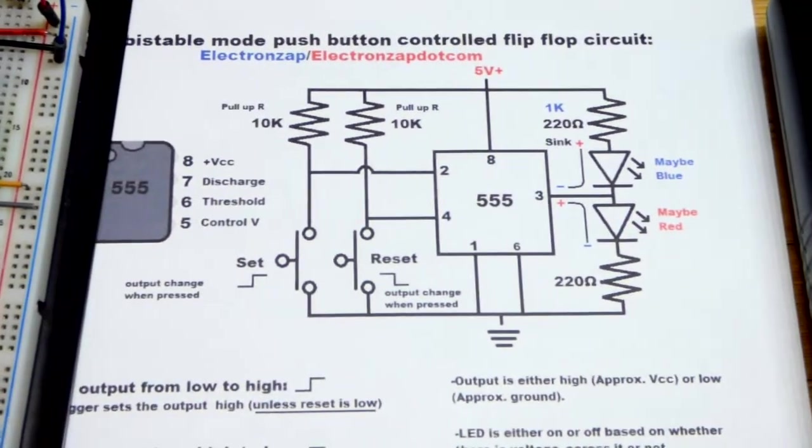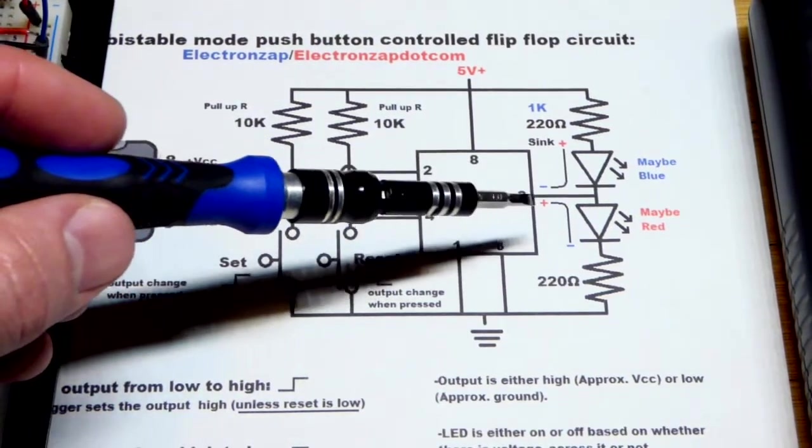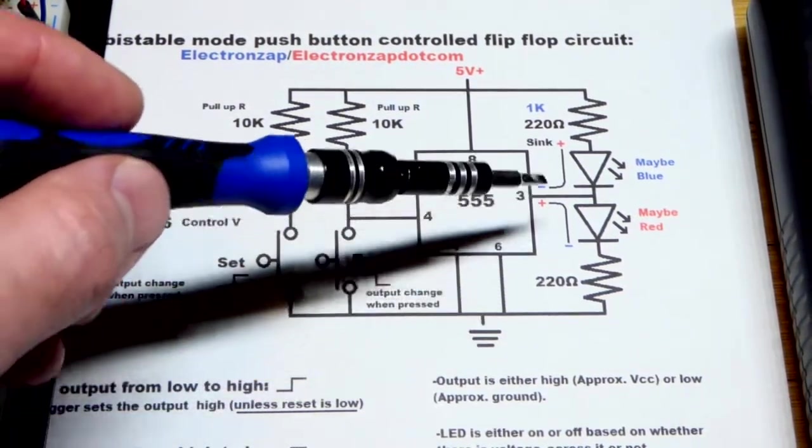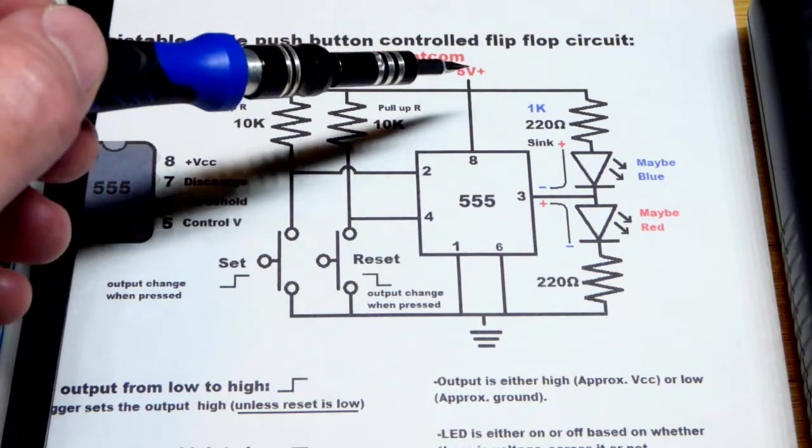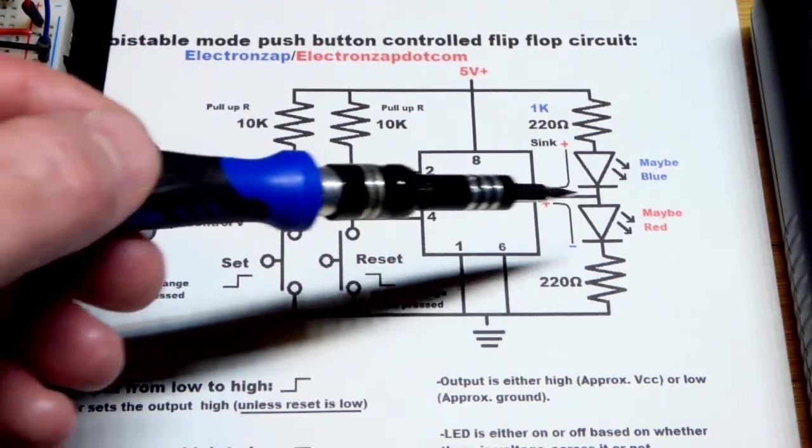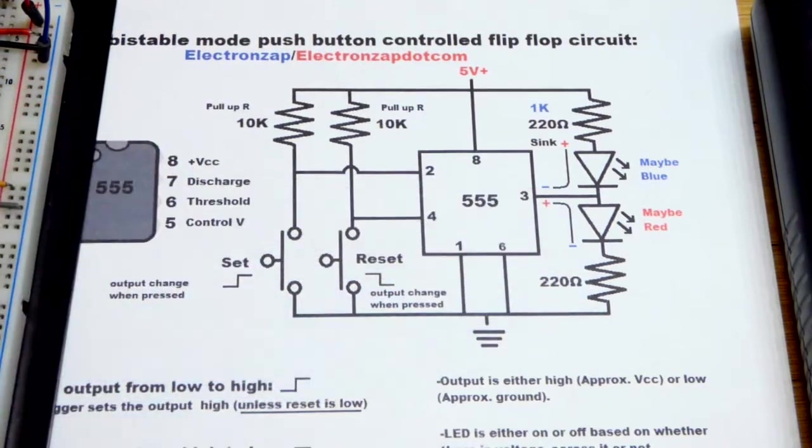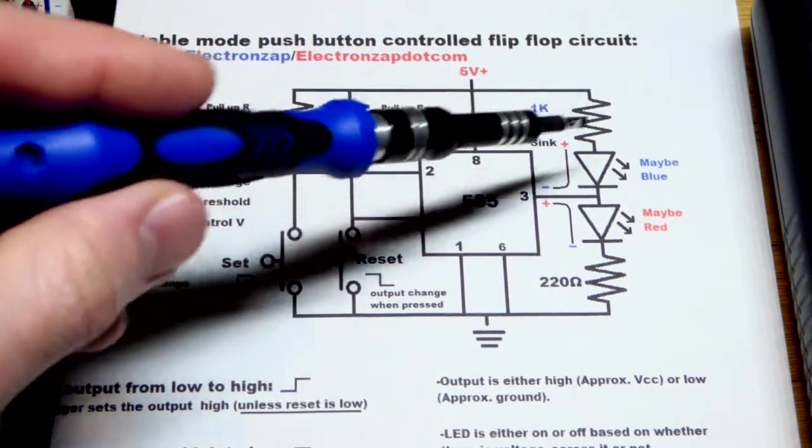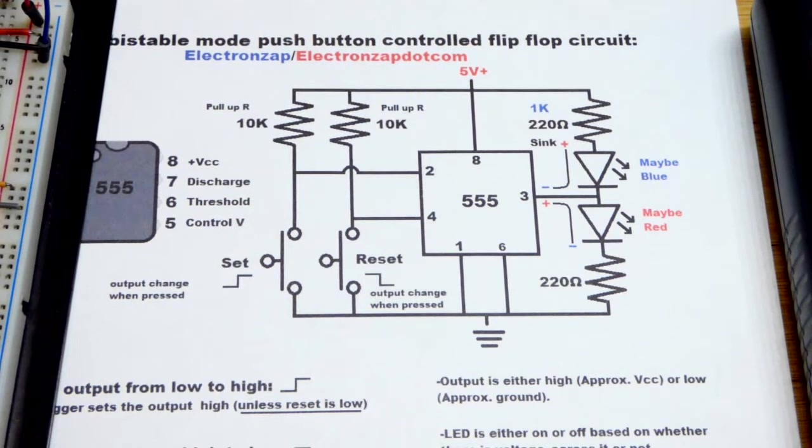Also, the output goes directly to ground when it's low. And then when it's high, it doesn't get up to 5 volts, unfortunately. You lose a bit of the voltage, probably about a volt, a volt and a half, something like that. So having a higher value resistor on the more positive side is a good thing. So I'm not going to go into that too much.